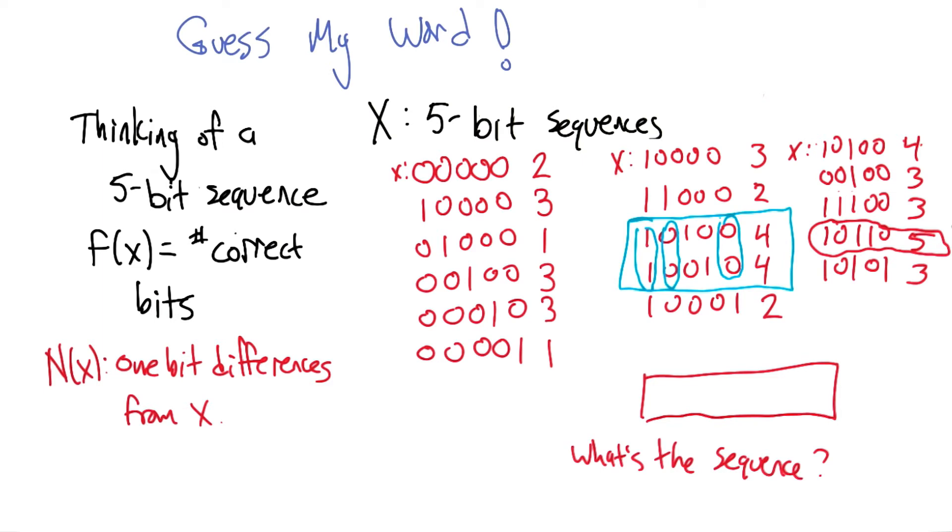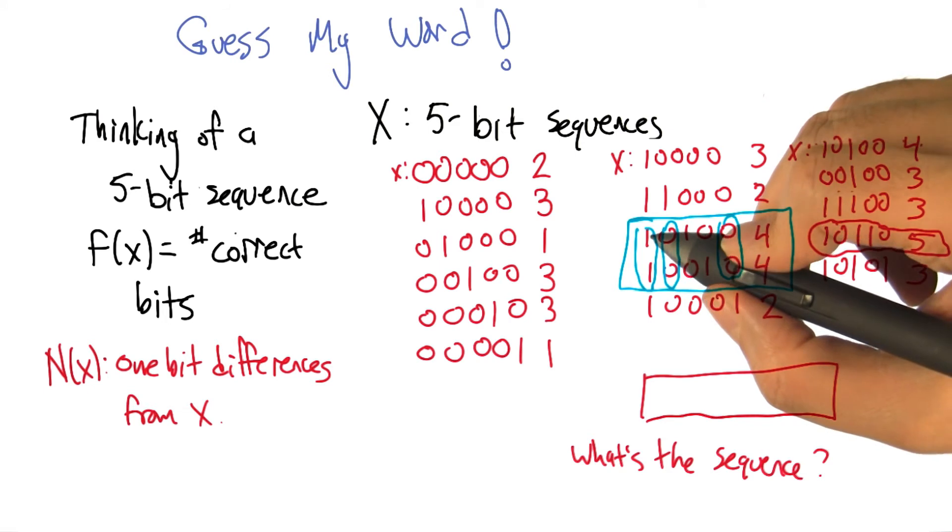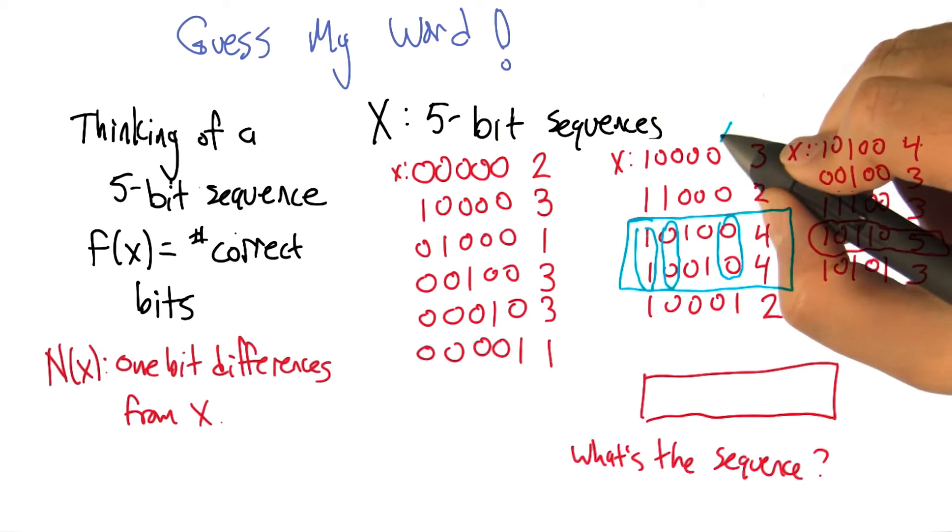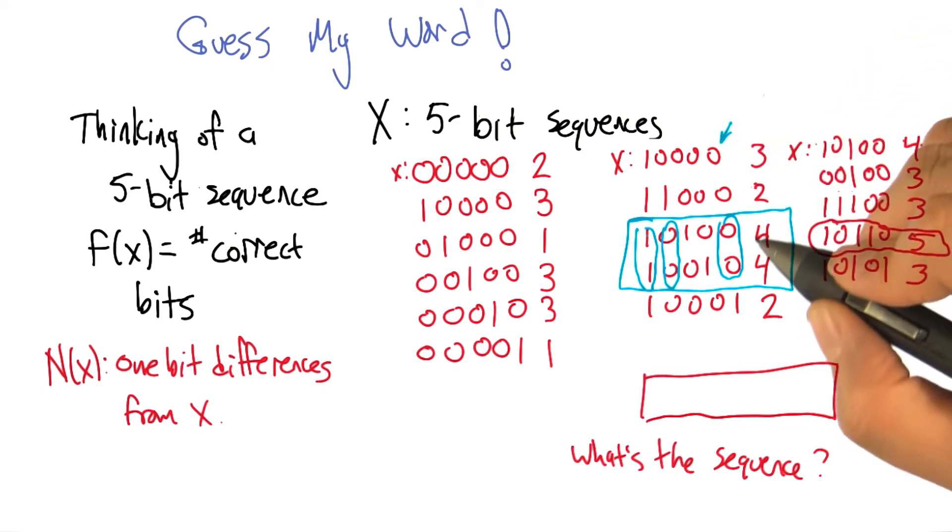We probably know that the zero one doesn't work. Because then the answer would be 1, 0, 0, 0, 0, which we already know is a three. Right. So then it has to be 1, 0, 1, 1, 0, which in fact it is.